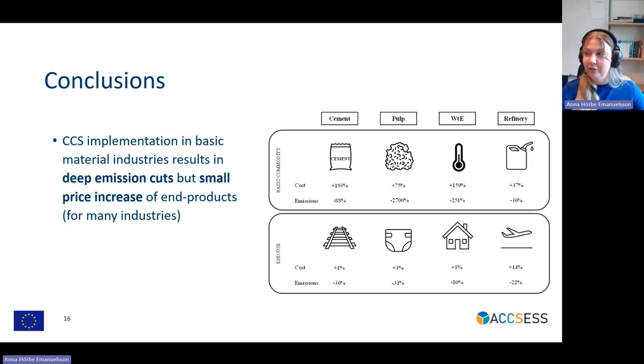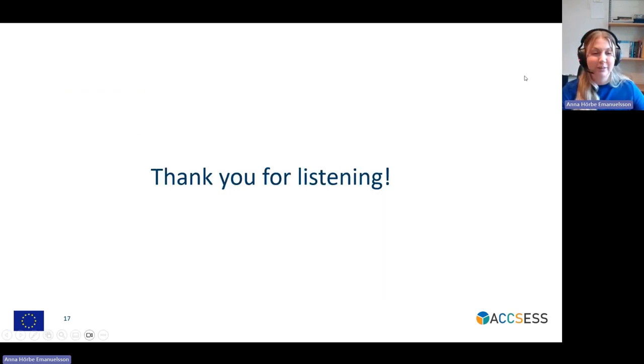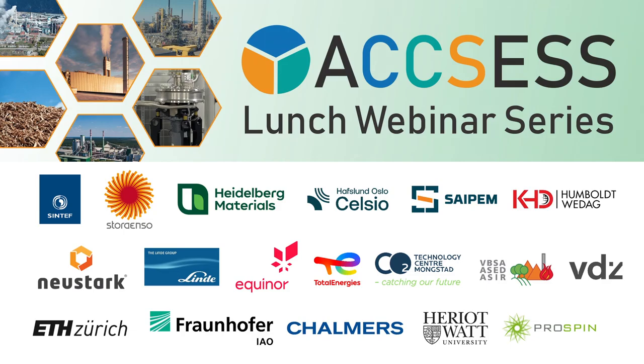So, to summarize: within the cement, pulp, and waste-to-energy sectors, CCS implementation results in deep emission cuts but with small price increases on end products. The refinery sector behaves quite differently. Thank you very much for listening.